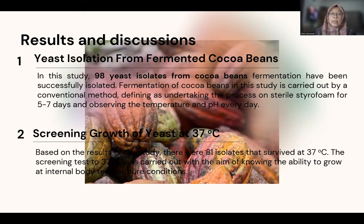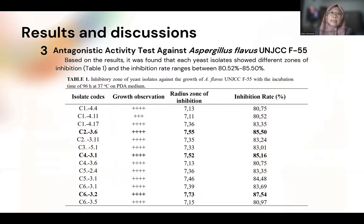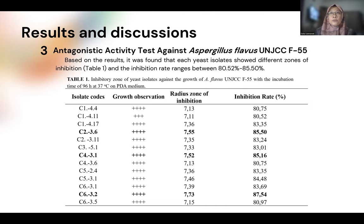The screening tests carried out the ability to grow. For the antagonistic results, we found that 40, 80, 50, and 85 percent of yeast can be inhibited. The yeast have the ability to control Aspergillus flavus. That is because yeast have the ability to produce some metabolites. The yeast can inhibit growth rate and they can delay sporulation of Aspergillus flavus.